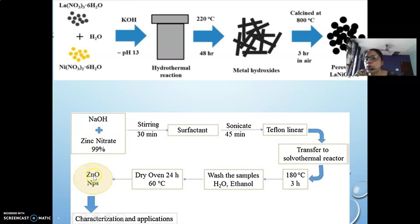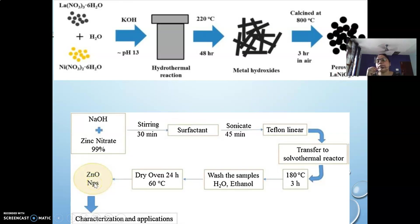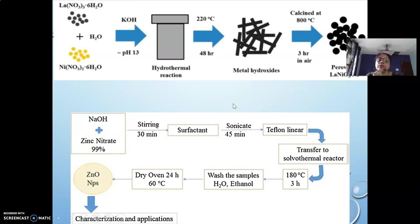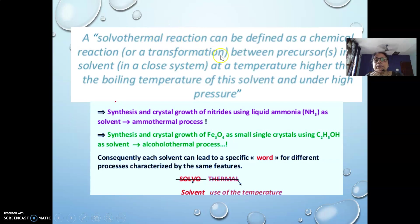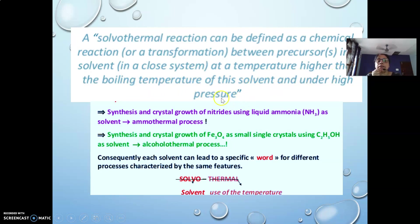Here we also get oxide nanomaterial — zinc oxide — but in the absence of water, the other example gives lanthanum nickel oxide, again a metal oxide nanoparticle. Both processes produce metal oxide nanoparticles, but differ only in that they utilize two different solvents: one non-aqueous and one aqueous. A solvothermal reaction can be defined as a chemical reaction between precursors A and B in a solvent in a closed system at a temperature higher than the boiling point of the solvent and under high pressure.